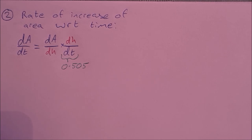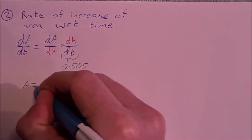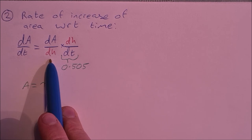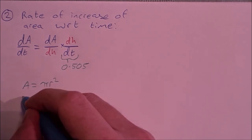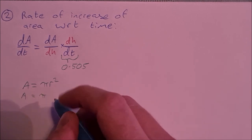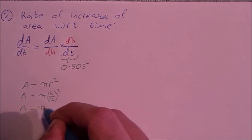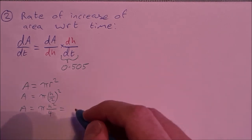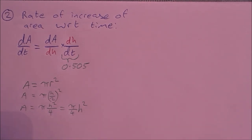The area of a circle is A = πr². I want to differentiate area with respect to height. From earlier, r = h/2, so A = π(h/2)² = πh²/4, which I can rewrite as (π/4)h².